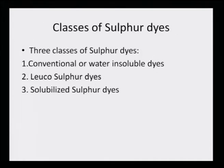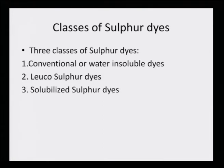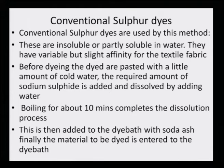There are three classes of sulphur dyes: conventional or water insoluble dyes, leuco sulphur dyes, and solubilized sulphur dyes. Looking at the conventional insoluble sulphur dye method, let us see how the dyeing process is carried out.